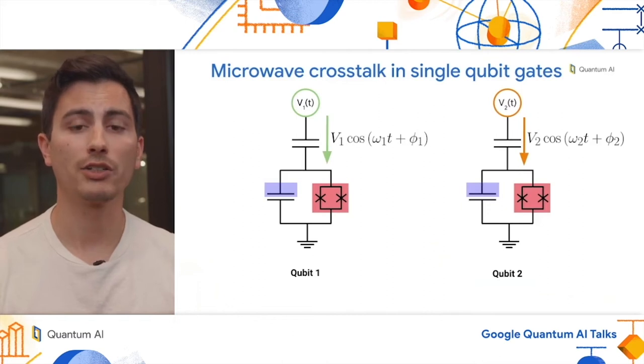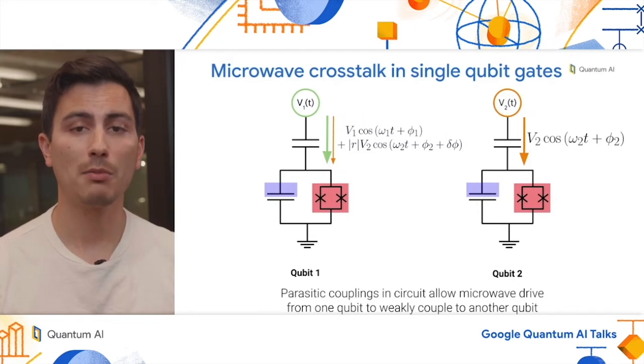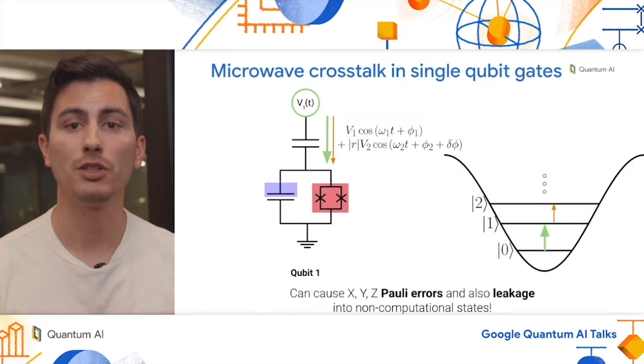Now in reality, when we actually run error correction, multiple qubits are doing single qubit gates simultaneously. And in the ideal case shown here in this little cartoon, each qubit has a designated microwave tone and well calibrated pulse parameters. Now in reality, due to parasitics in our circuit, microwave drives from one qubit can actually leak over and drive another qubit. So in this cartoon, I've shown you that some of the microwave drive from qubit two is actually weakly coupling and driving qubit one. Now in this situation, you can get simple x, y, or z Pauli errors, but you can also get leakage into non-computational states. This is shown pictorially in the image on the right. If for instance, the microwave drive frequency of qubit two is close to resonance with the one to two energy level splitting in qubit one, you can drive population from the one state of qubit one into the two state causing leakage.